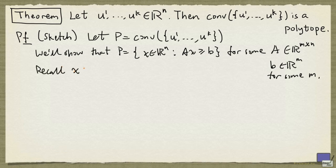Recall that x is in the convex hull of u^1 up to u^k if and only if there exists λ_1 up to λ_k greater than or equal to 0.